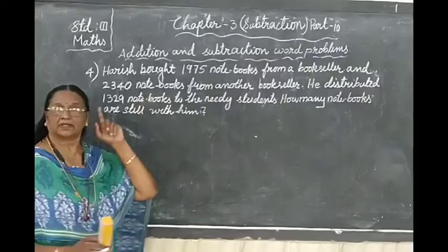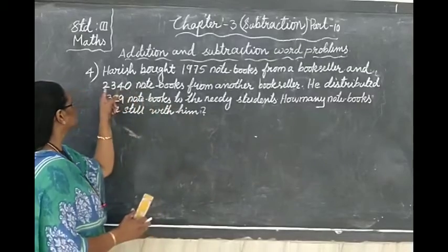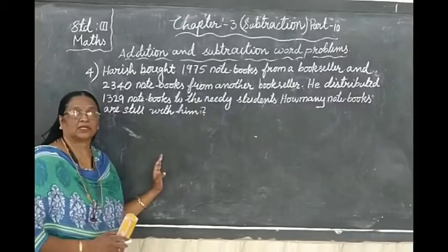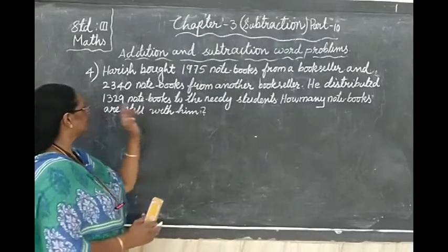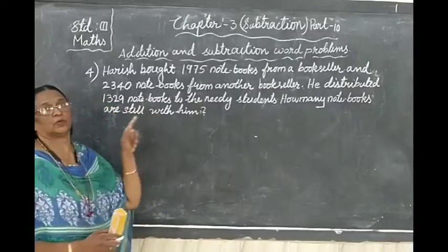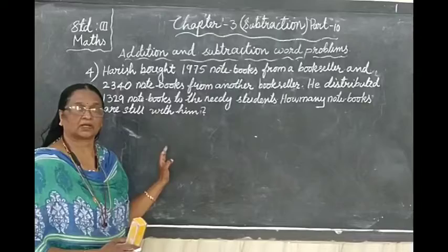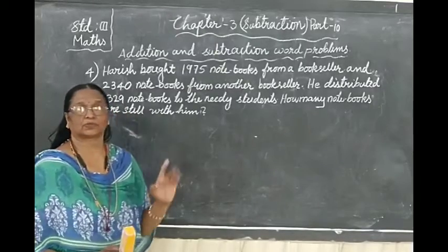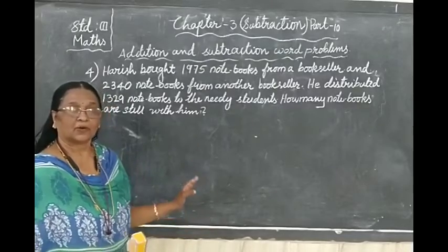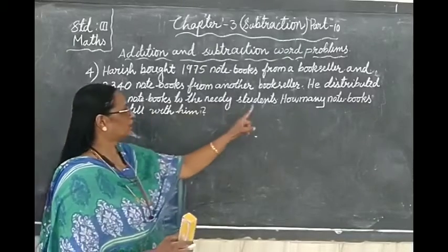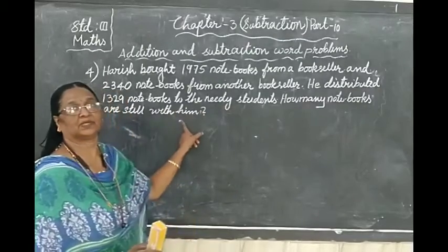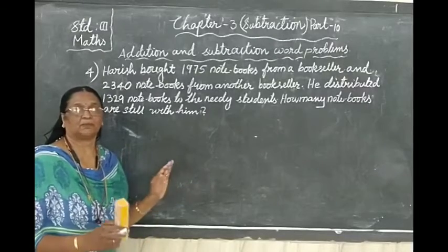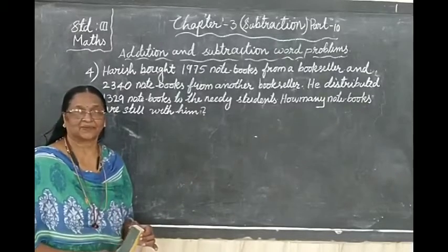Again, what did he do? He went to another bookseller and bought 2,340 notebooks. And after that, what did he do? He has given 1,329 notebooks to the needy students. Now, what we have to find out? How many books are still with him? After giving to these students, what is the balance? Shall we do it?